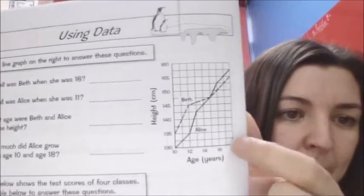For example this first one asks how tall was Beth when she was 16. You can see that Beth if you look closely is the dotted line and Alice is the straight line. So you need to have a look at age 16, go up to Beth's line which is the dotted one and then go across and that will give you the height.